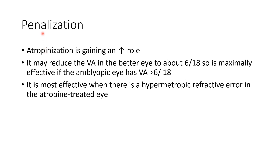The next treatment option is penalization. Atropinization is gaining an increasing role in the treatment of amblyopia. It may reduce visual acuity in the better eye to about 6/80, so it is maximally effective if the amblyopic eye has visual acuity greater than 6/80. It is most effective when there is hypermetropic refractive error in the atropine-treated eye. Remember, we treat the better eye with atropine.